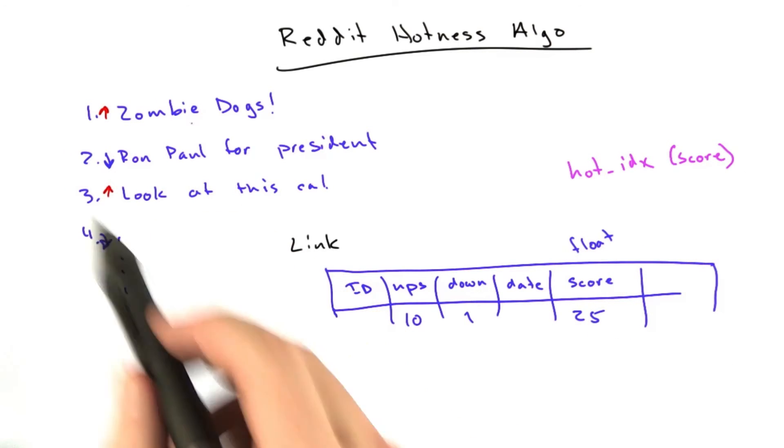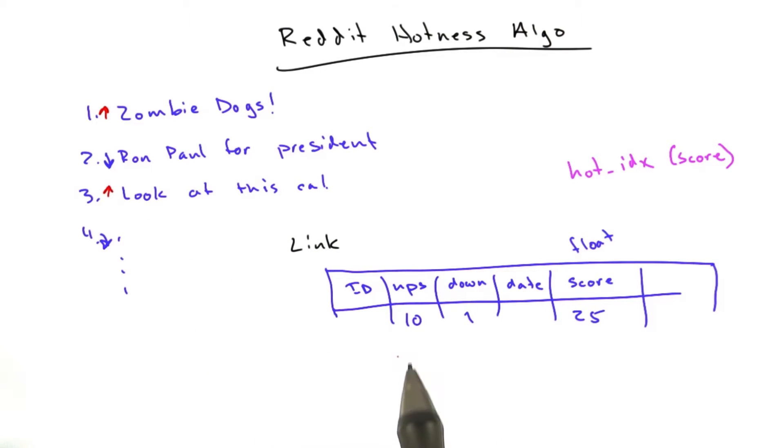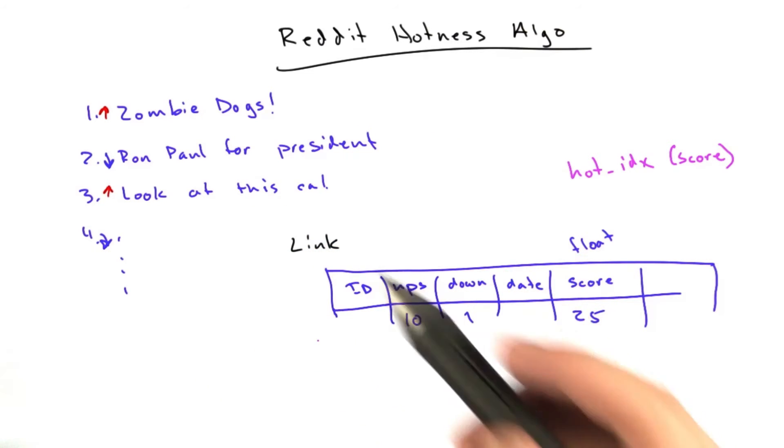One approach to generating this front page might be to take all of the links submitted in the last 24 hours, do some fancy math, sort them by how many upvotes and downvotes, the spread between these two votes is, and sort it that way. But that doesn't really capture that hotness, how things rise and fall.